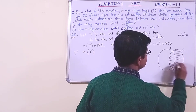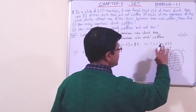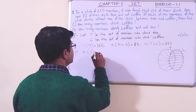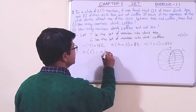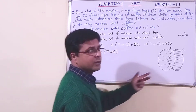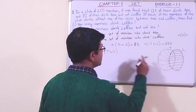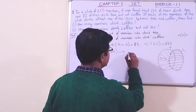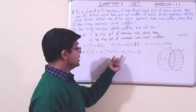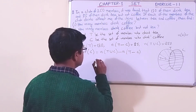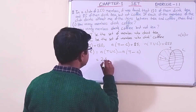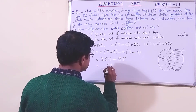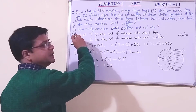We are going to find the part for coffee — who drink coffee. From the whole thing we shall subtract this part: n(T ∪ C) minus n(T - C). So n(T ∪ C) is 250 and n(T - C) is 85. Therefore n(C) = 250 - 85 = 165.